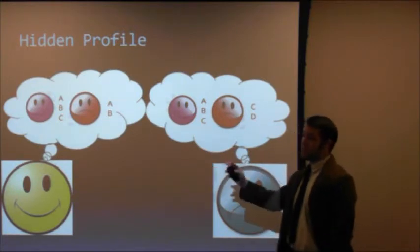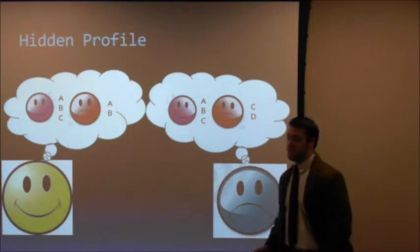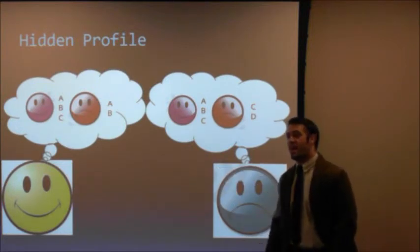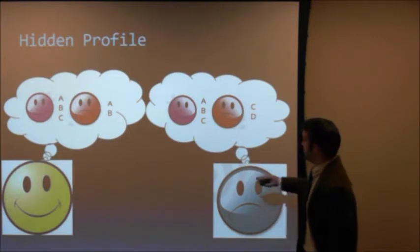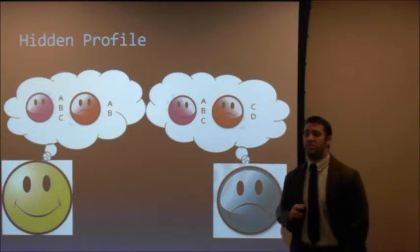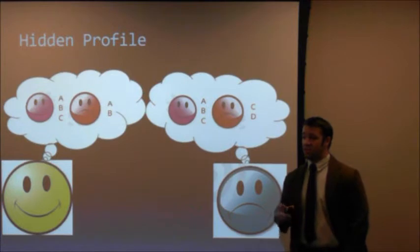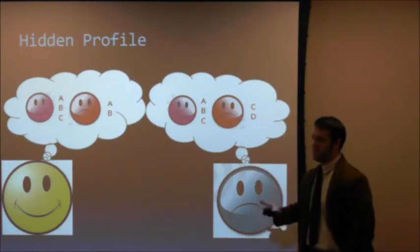In this case, the pink candidate has three positive pieces of information about them, A, B, and C, but the red candidate has four pieces of positive information, A, B, C, and D. According to the common information effect, even though the red candidate is clearly superior, Mr. Yellow and Mr. Blue are going to select the pink candidate.